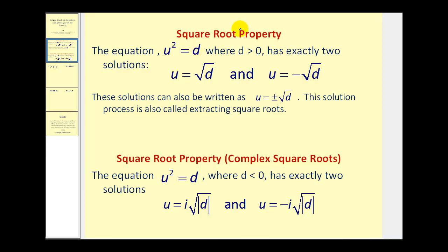The square root property states that the equation U squared equals D, where D is greater than zero, has exactly two solutions: U equals the square root of D, and U equals the negative square root of D. Sometimes this is written as U equals plus or minus the square root of D.